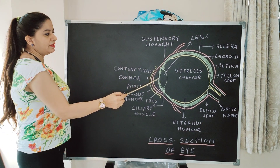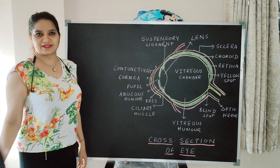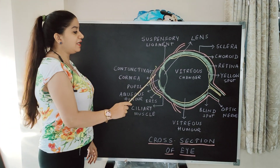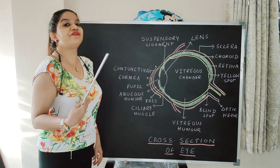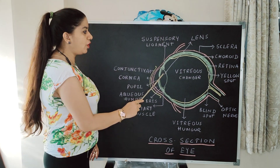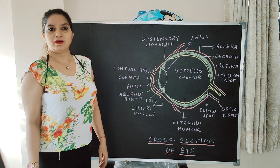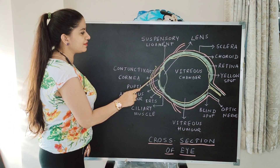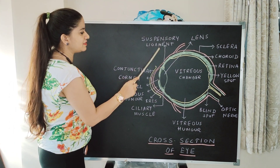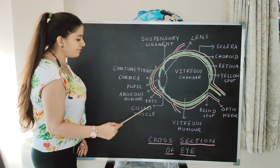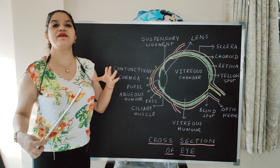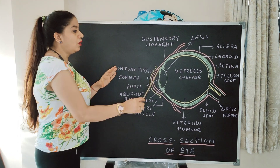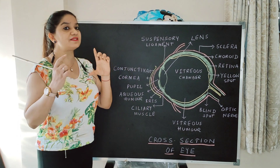Now we will talk about the most important thing — the lens. The lens is crystalline and biconvex. It helps in refraction of light and forms the image on the retina. The lens is held by the suspensory ligament, which is finally attached to the ciliary muscles. So the suspensory ligament and the ciliary muscle hold the lens in its position.